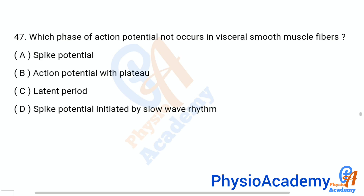Question number 47: Which phase of action potential does not occur in visceral smooth muscle fibers? Option A: spike potential, option B: action potential with plateau, option C: latent period, option D: spike potential initiated by slow wave rhythm. The correct answer is option C: latent period.